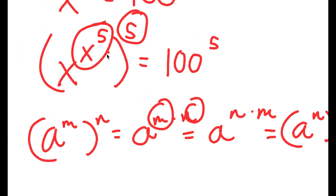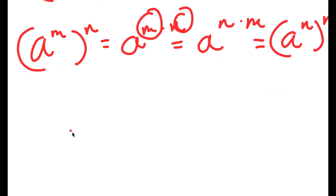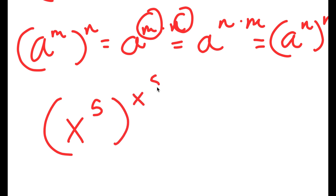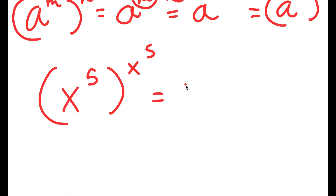So, x to the power of x to the power of 5, to the power of 5 — I can switch the places of these two. And now, this is going to equal x to the power of 5 to the power of x to the power of 5, is equal to 100 to the power of 5.